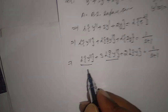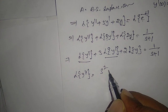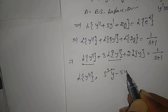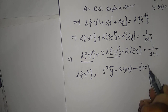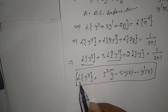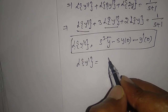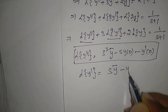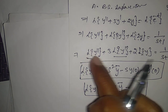We have two key formulas here. L{y''} = s²·Ȳ − s·y(0) − y'(0), and L{y'} = s·Ȳ − y(0). Substitute these two values into the equation.